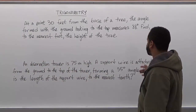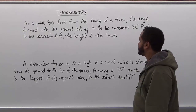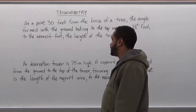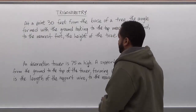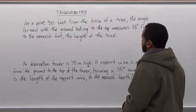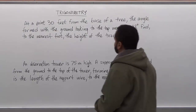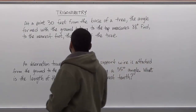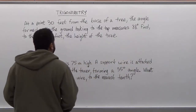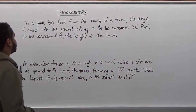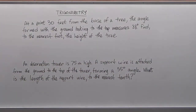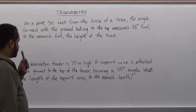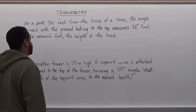Let's take a look at our series of questions — here we have two questions. The first one says: at a point 30 feet from the base of a tree, the angle formed with the ground looking to the top measures 88 degrees. Find, to the nearest foot, the height of the tree.